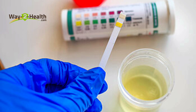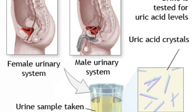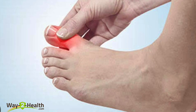Uric acid is actually an anti-inflammatory metabolite. If so, then why are we worried if it is elevated? The main reason is it gets deposited in joints — mainly the small joints of the hand and foot — leading to inflammation and pain in those joints, which is also called gout.